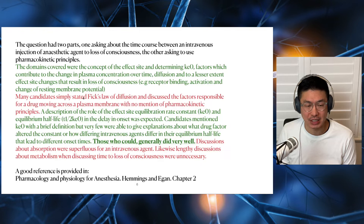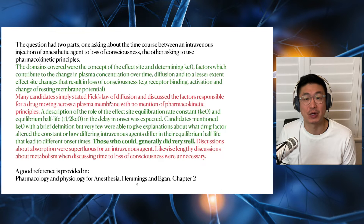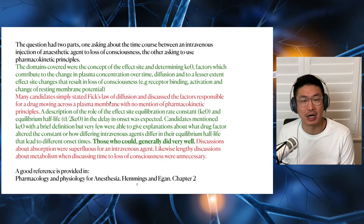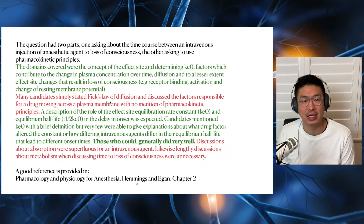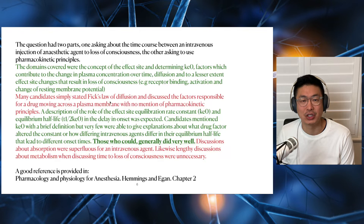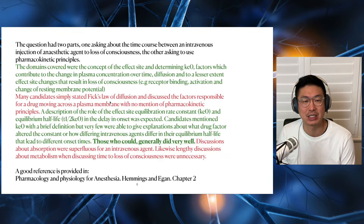Many candidates simply stated Fick's law of diffusion and discussed the factors responsible for a drug moving across a plasma membrane with no mention of pharmacokinetic principles. A description of the role of the effect site equilibration rate constant — KEO — and equilibration half-life, T-half-KEO, in the delay in onset was expected. Candidates mentioned KEO with a brief definition, but very few could explain why drug factors altered the constant or how differing intravenous agents differ in their equilibration half-life leading to different onset times. Those who could generally did very well. Discussions about absorption were superfluous for an intravenous agent, and lengthy discussions about metabolism when discussing time to loss of consciousness were also unnecessary.